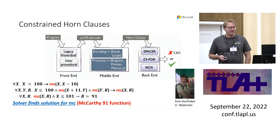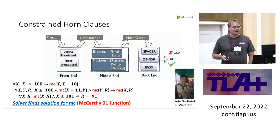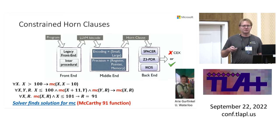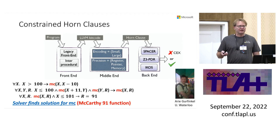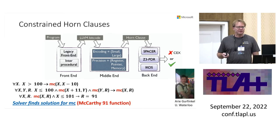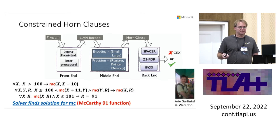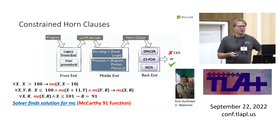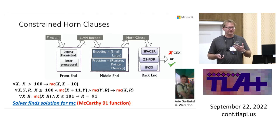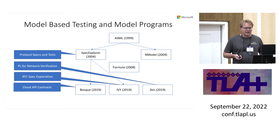As an example of constraint horn clauses, here I'm encoding the McCarthy 91 function as a relation between input and output. If the input is greater than 100, the output is X minus 10. The second line says you make two recursive calls if the input is less than 100. The specification in the last line says that whenever you compute an output and the input is less than 101, the output is 91. You can solve for MC such that all implications are true if and only if the invariant holds, up to completeness.